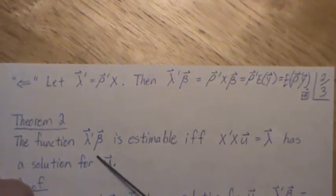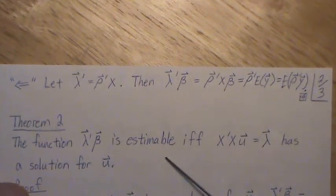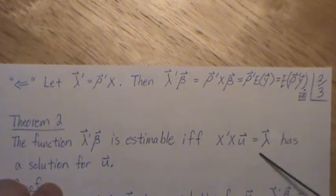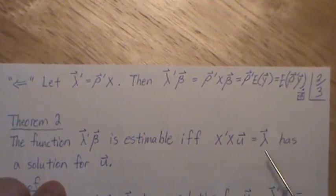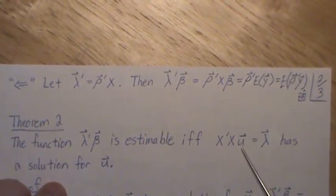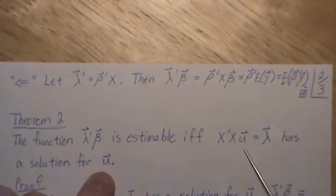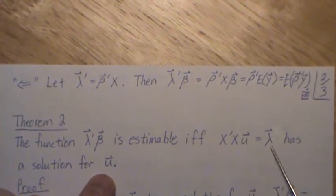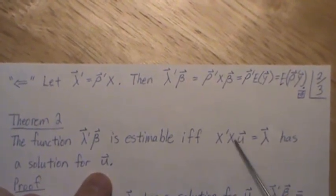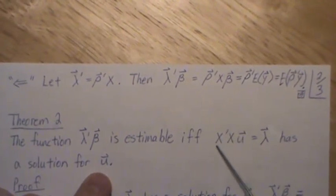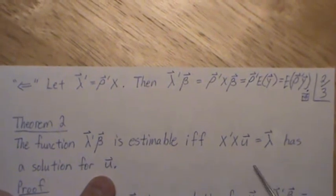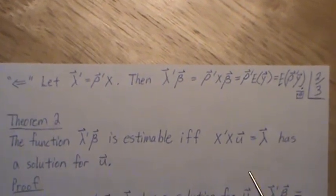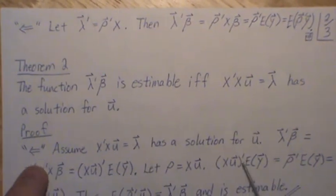Now Theorem 2: the function is estimable if and only if this equation has a solution for u — meaning lambda is actually in the column space of x transpose x. So this is another necessary and sufficient condition.